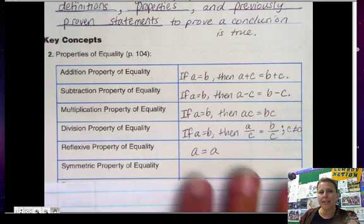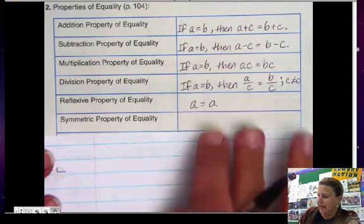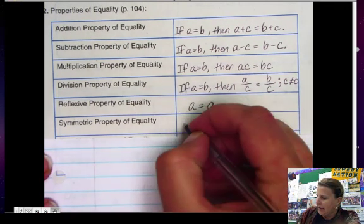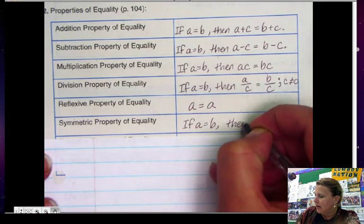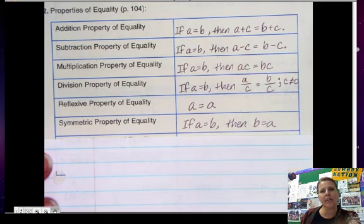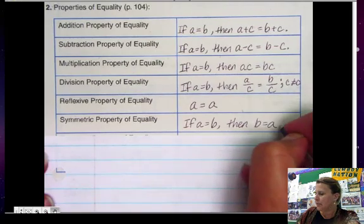The symmetric property of equality says that if a equals b then b equals a. So you're allowed to flip flop it around and it still is a true statement.